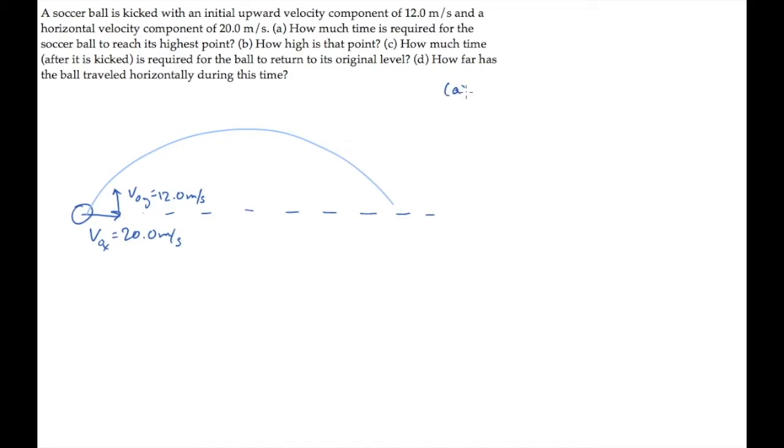Part A asks us how much time is required for the ball to reach its highest point. That's this point up here. At that point, the vertical velocity component is zero. The ball is changing from moving up to moving down. We can find that time using the first kinematic equation. The final y component of velocity equals the initial minus g times t, and we'll call the time t_h when it gets to the highest point.